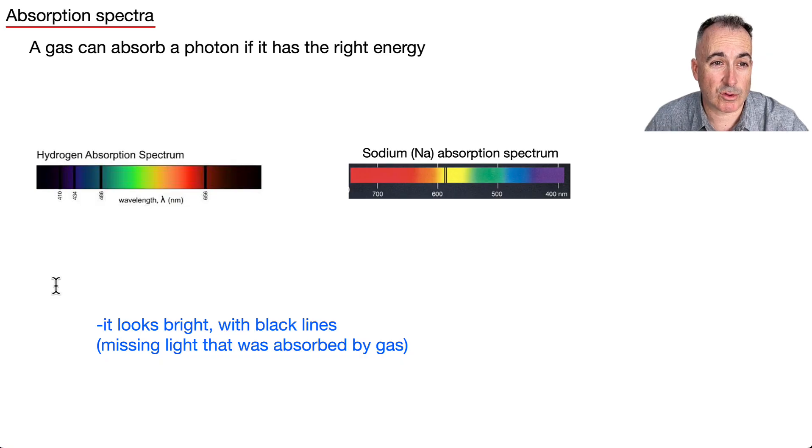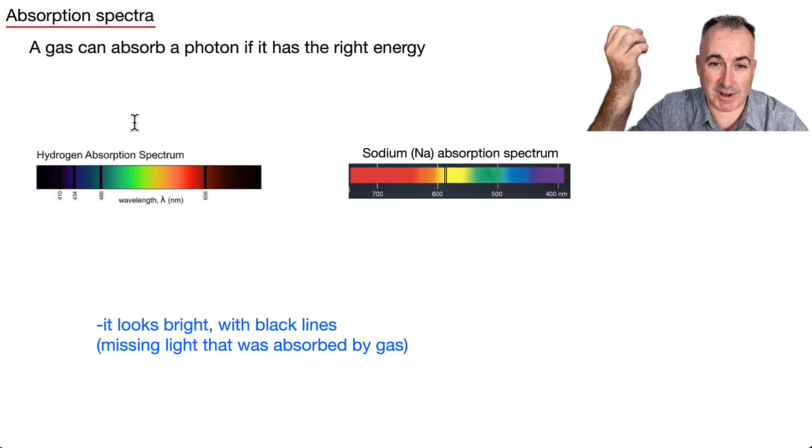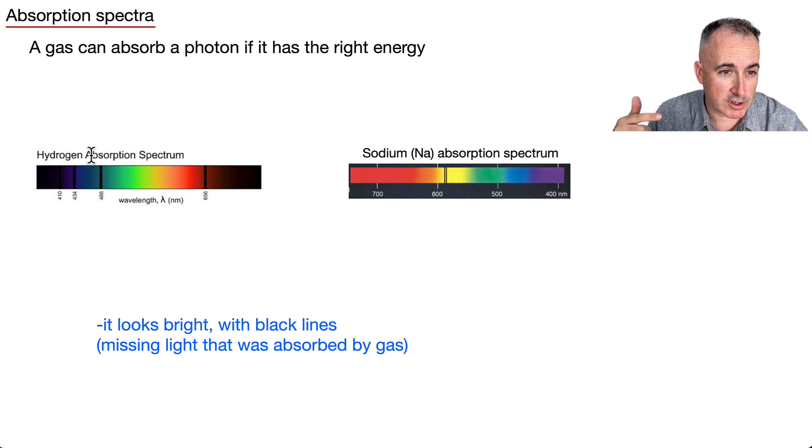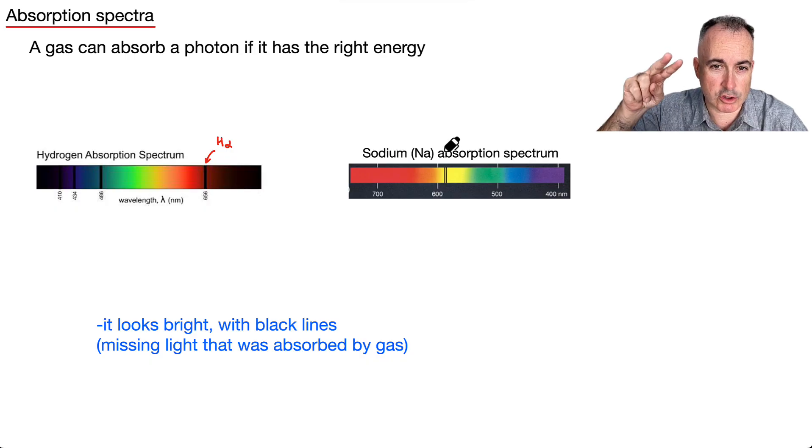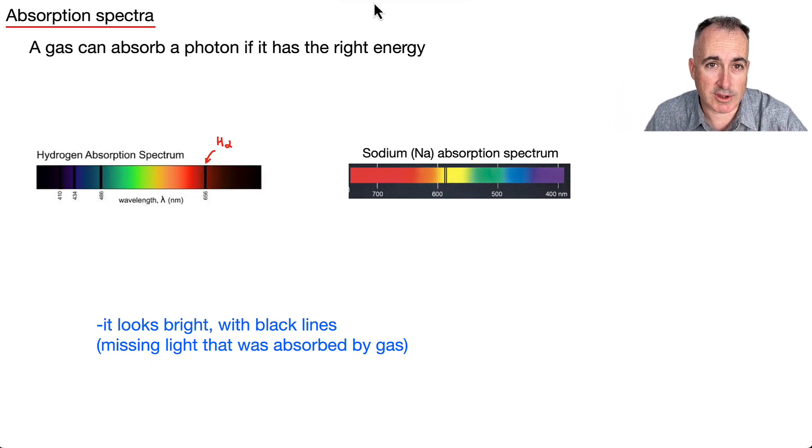Okay, so a gas can also absorb a photon if it has the right energy. So this is called absorption spectra. So it looks very similar, right? This is when the light is first going through a gas and the gas is basically eating those things. Do you notice though, for the hydrogen one, it's still got these same lines. So for example, we were looking at this hydrogen alpha before at 656. It's still there. It's just that it's all color with black. Same thing with these really strong two double ones, for example, for sodium that we saw before. They're there as well. So that's why it looks bright, but it has black lines. That's because the missing light was absorbed by the gas.